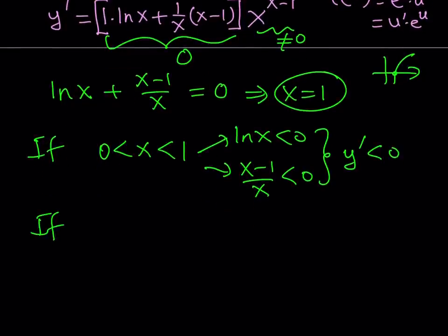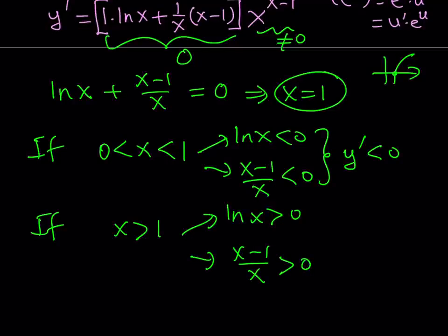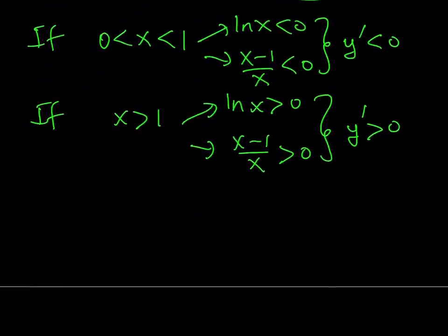What happens if x is greater than 1? Then lnx is going to be positive. And of course, our other piece, which is added, is going to be positive. Because think about something greater than 1, like 2. And this indicates that y prime is positive. So what does this tell you?